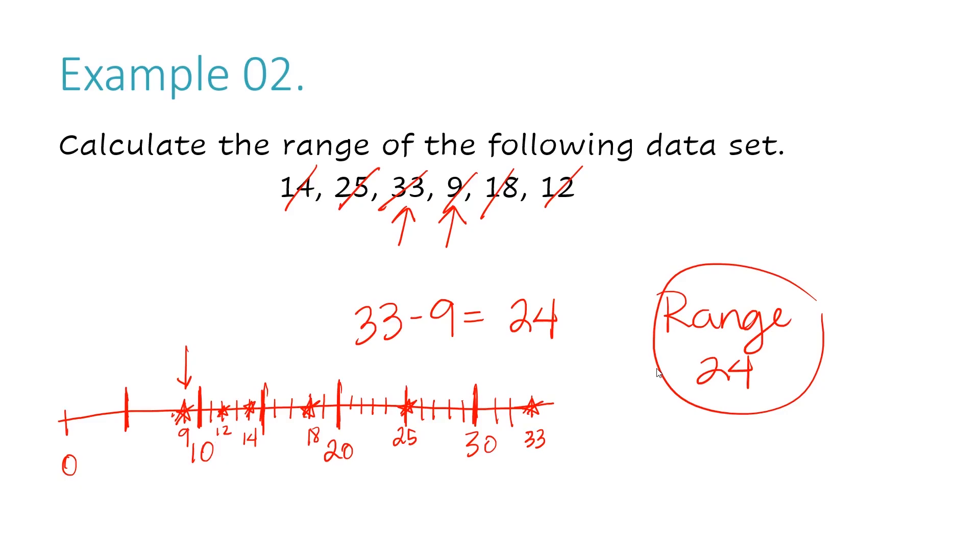Let's look at example number three. Which of the following data sets of numbers has the largest range? This takes it a step further. We're going to calculate the range twice for two separate data sets. And then we just answer the question, which set has the largest range? So for my first set, I got to figure out my smallest number and my largest number and subtract them. My smallest is 25, my largest is 34. Subtract them, so I have 34 as the largest minus the 25, and that would give me 9. The range of data set 1 is 9. Now I got to figure out my range of data set 2. My largest is 13, my smallest is 2, so I subtract those. 13 minus 2 equals 11. My range for data set 2 is 11.